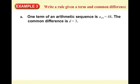For example three, we're going to write a rule given a term and common difference. One term of an arithmetic sequence is A19 equals 48 — so the 19th term equals 48, meaning when we plug in 19 for N we get an output of 48. The common difference is D equals 3.